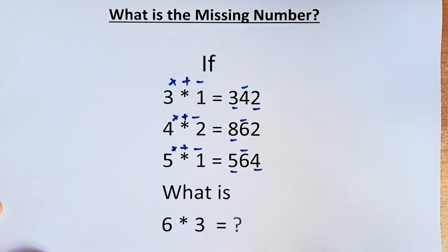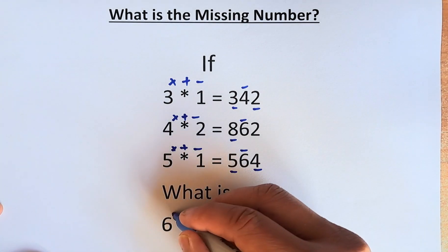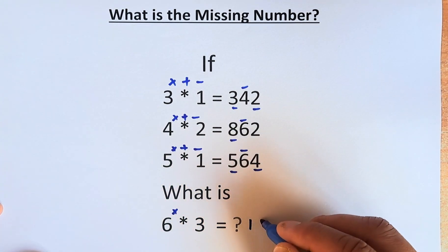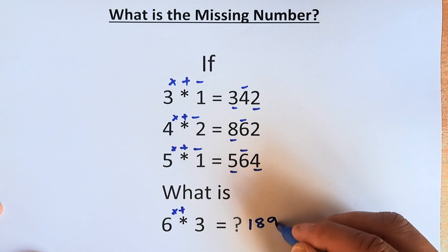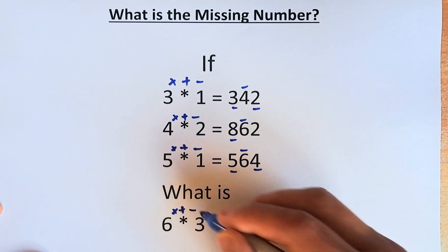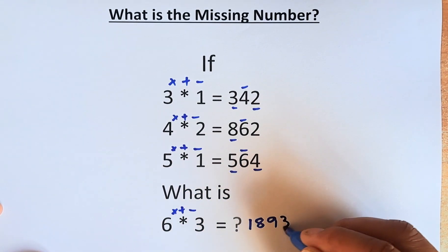So the question is, what is 6 star 3? First we multiply: 6 times 3 gives us 18, so we write 1, 8. Then we add: 6 plus 3 is 9. And the last one, 6 minus 3 is 3.